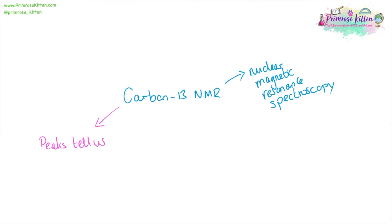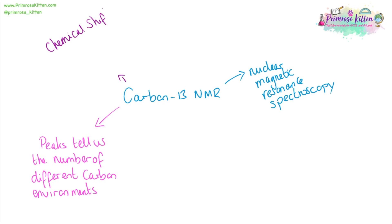Carbon NMR can tell us quite a lot of information about a compound. The number of peaks tells us the number of different environments, and the chemical shift tells us the type of chemical environments.